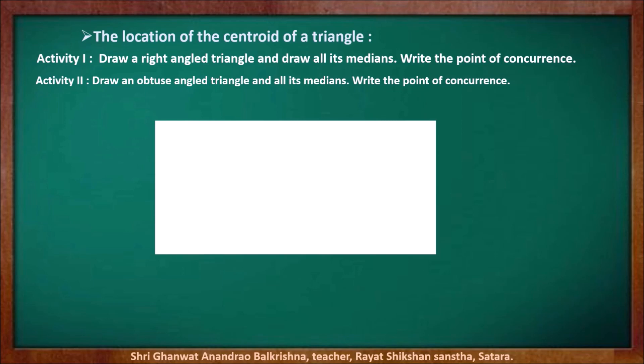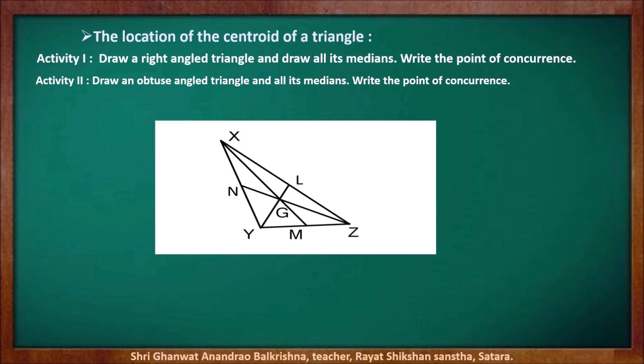Now for another activity, draw an obtuse-angled triangle and draw its medians. Find the location of the centroid of that triangle. We have drawn here obtuse-angled triangle XYZ. Segments XM, YL, and ZN are the medians, and G is the point of concurrence — G is the centroid. Here also, we found that the centroid G is in the interior of the triangle.